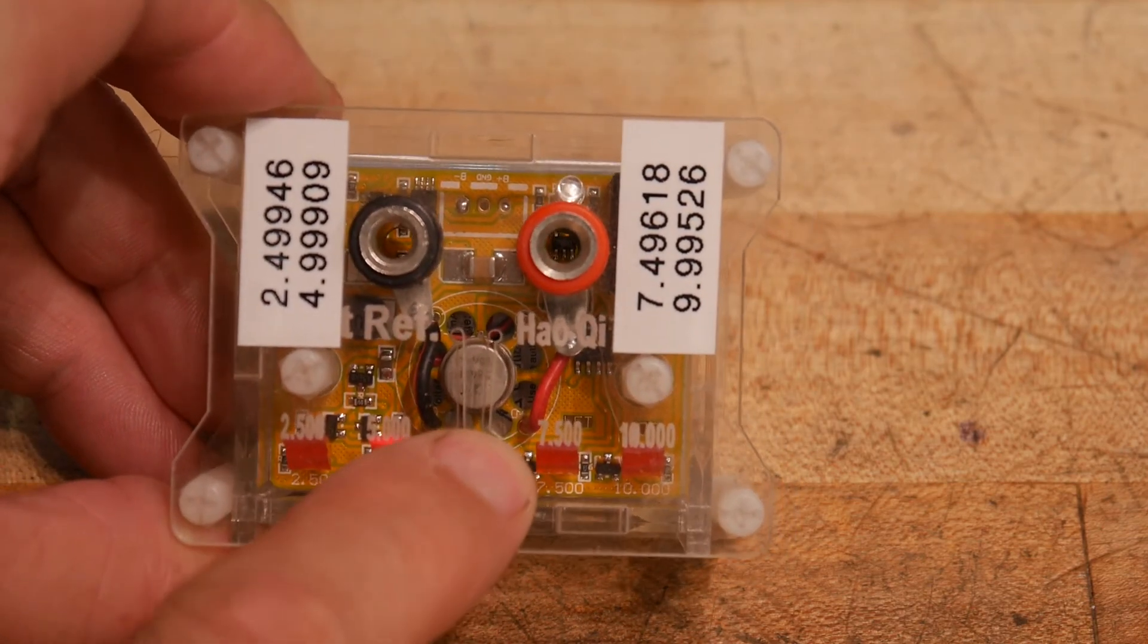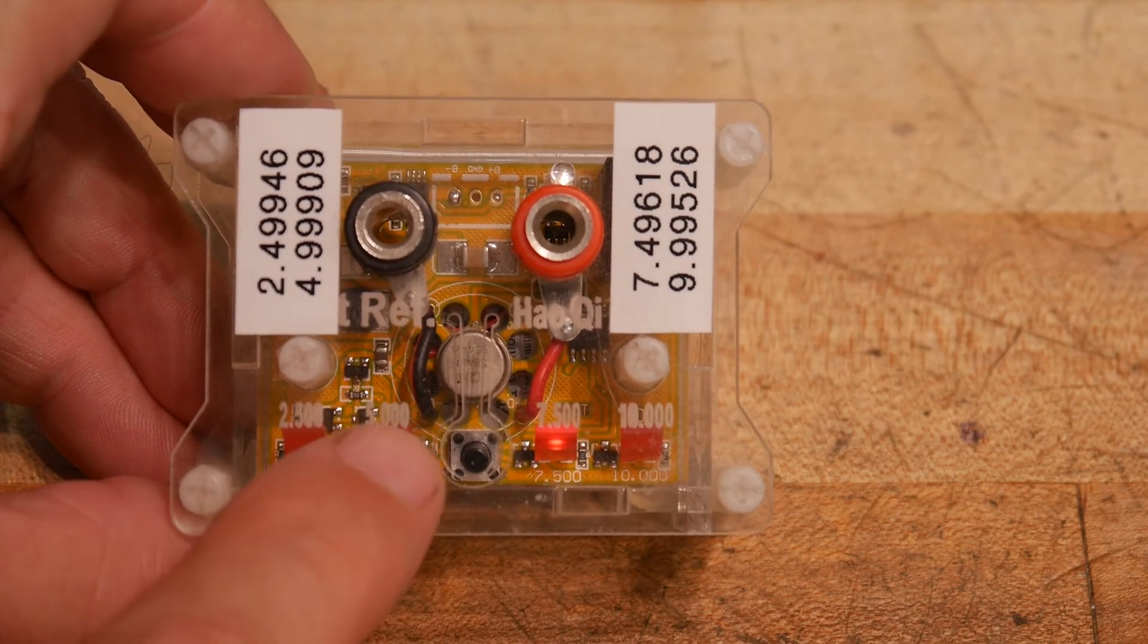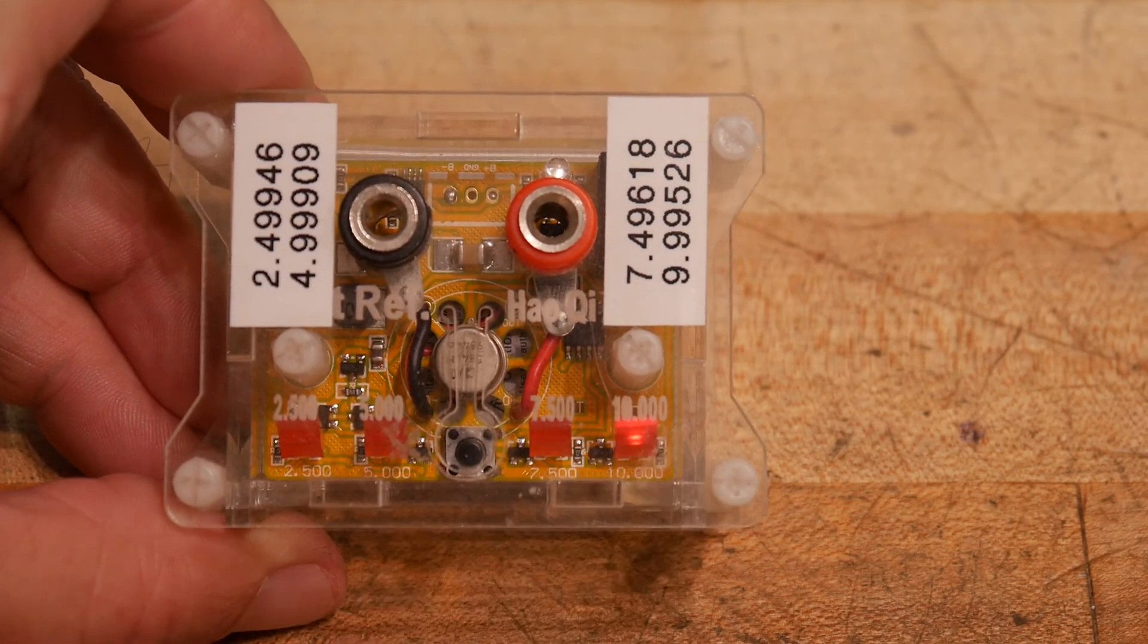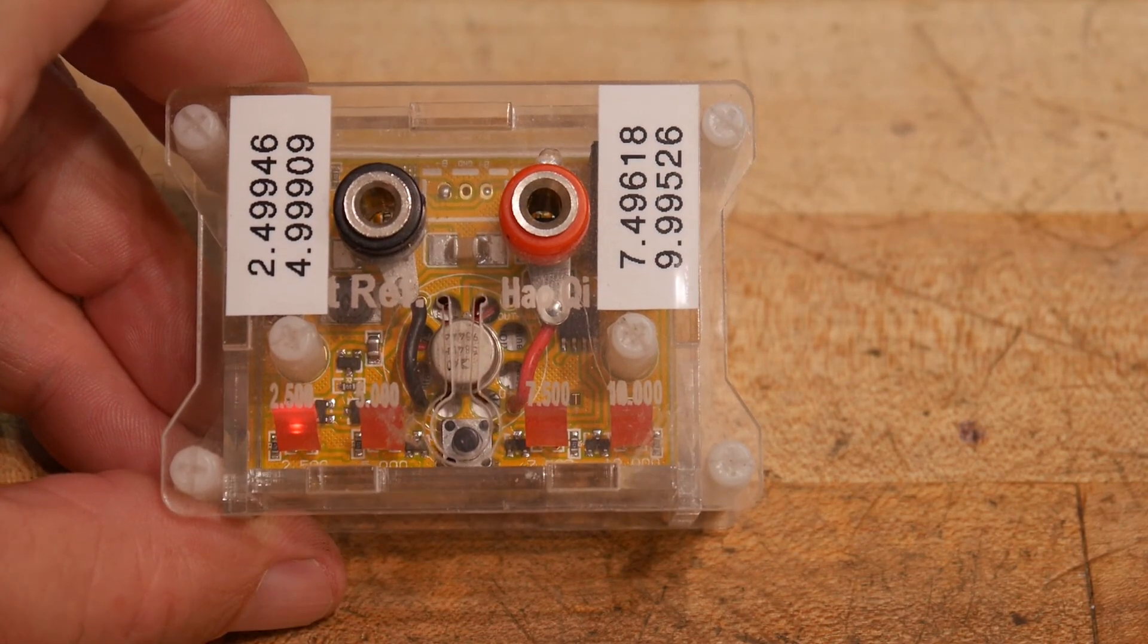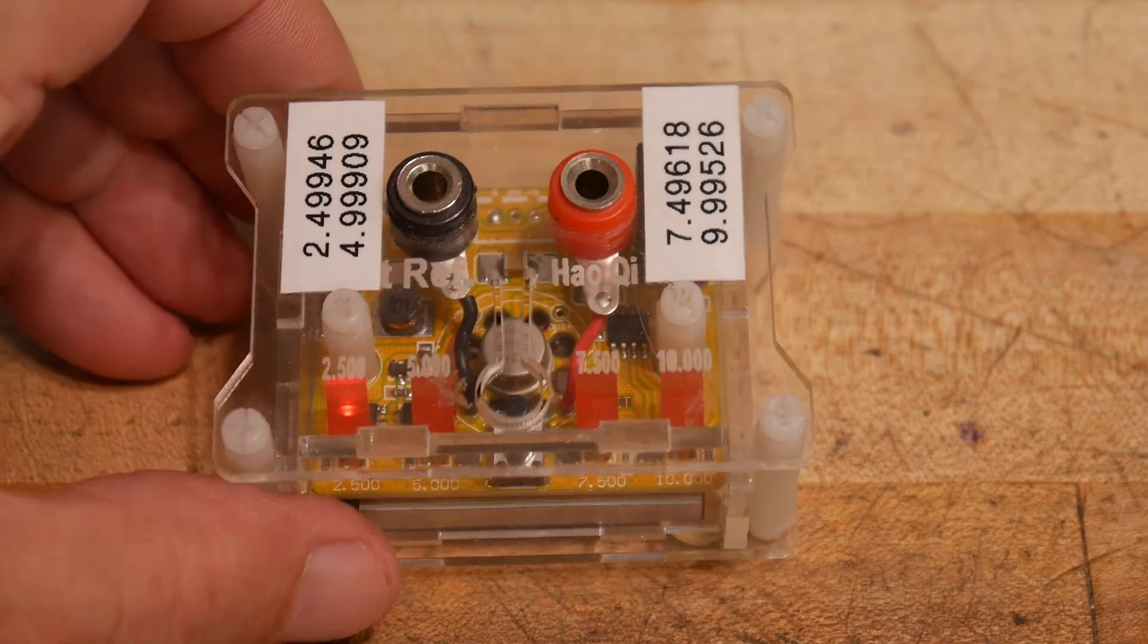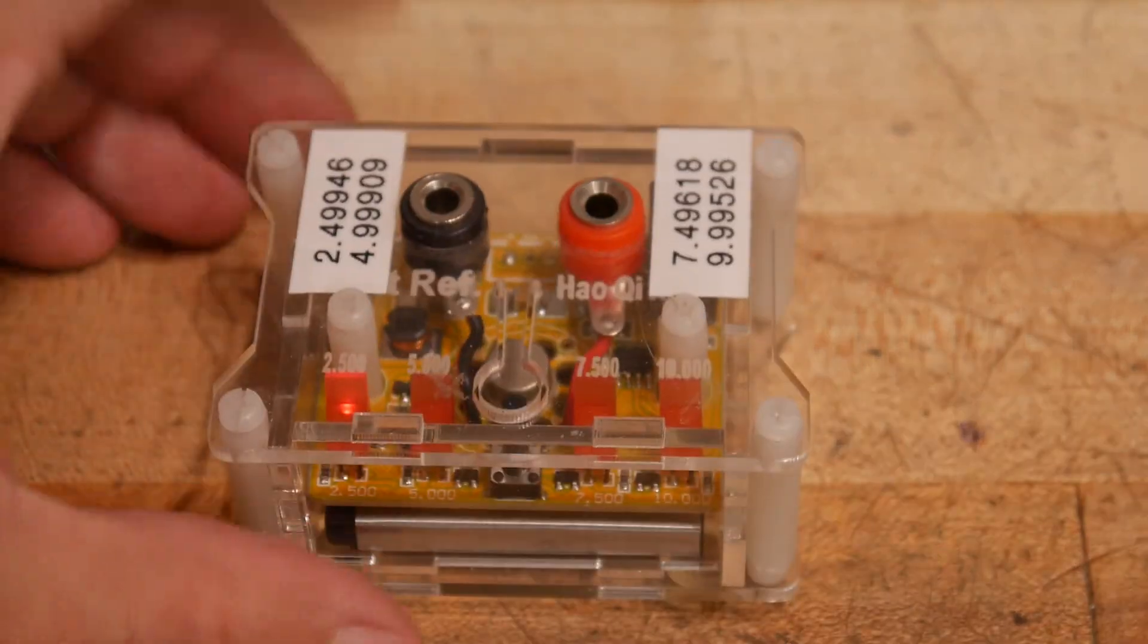And there's silkscreen here that says 2.5. If you press it again, it goes to 5. Press it again, it goes to 7.5. Press it again, it goes to 10. And then it cycles back around.